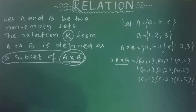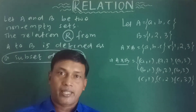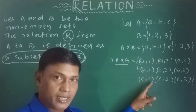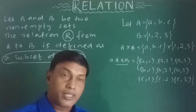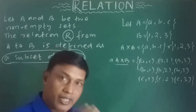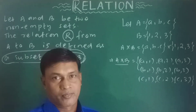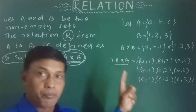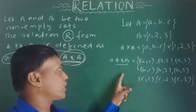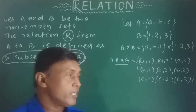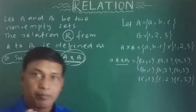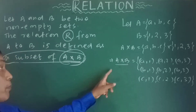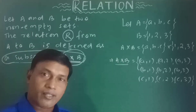If A×B is a set, it has many subsets. Any subset of A×B is a relation from A to B. That set which is a subset of the Cartesian product A×B will be a relation from A to B. So relation means a subset of the Cartesian product — any subset of A×B is a relation from A to B.